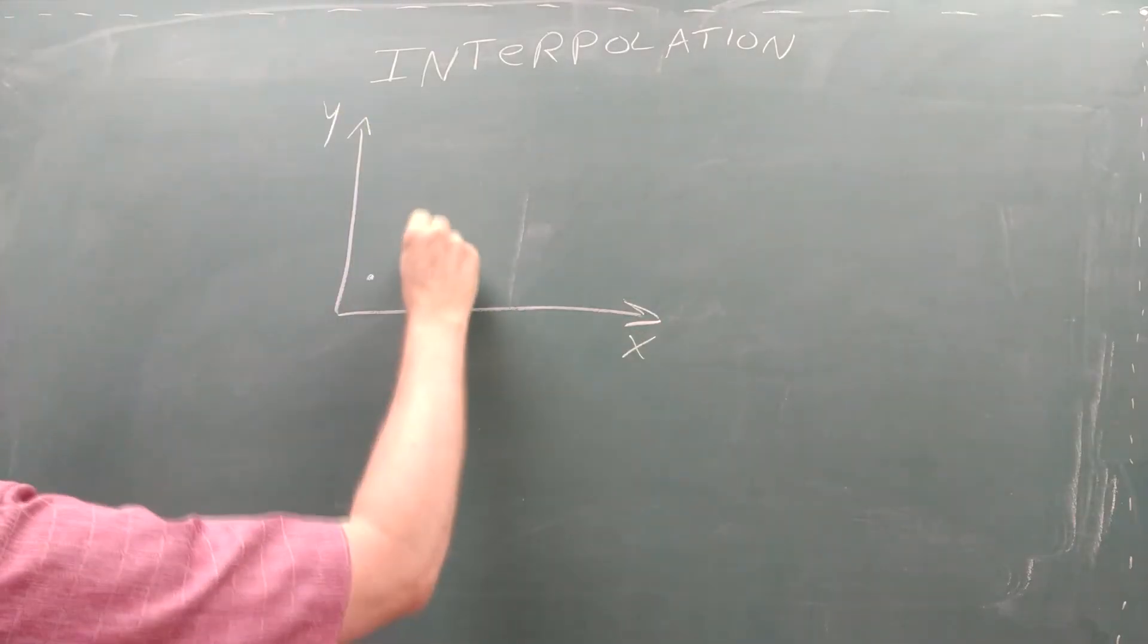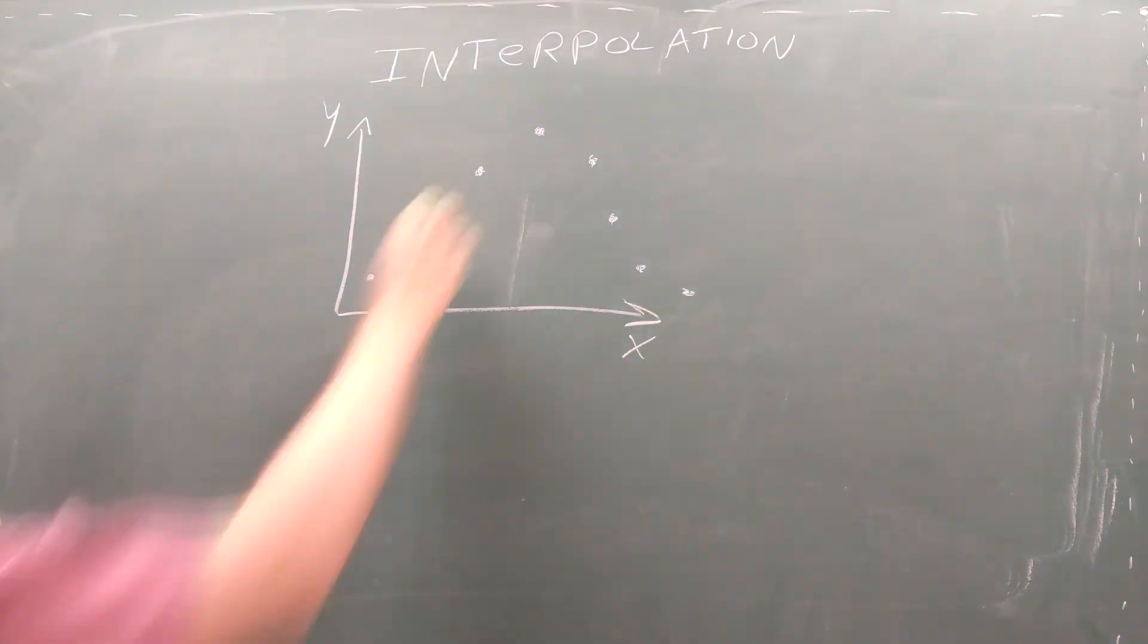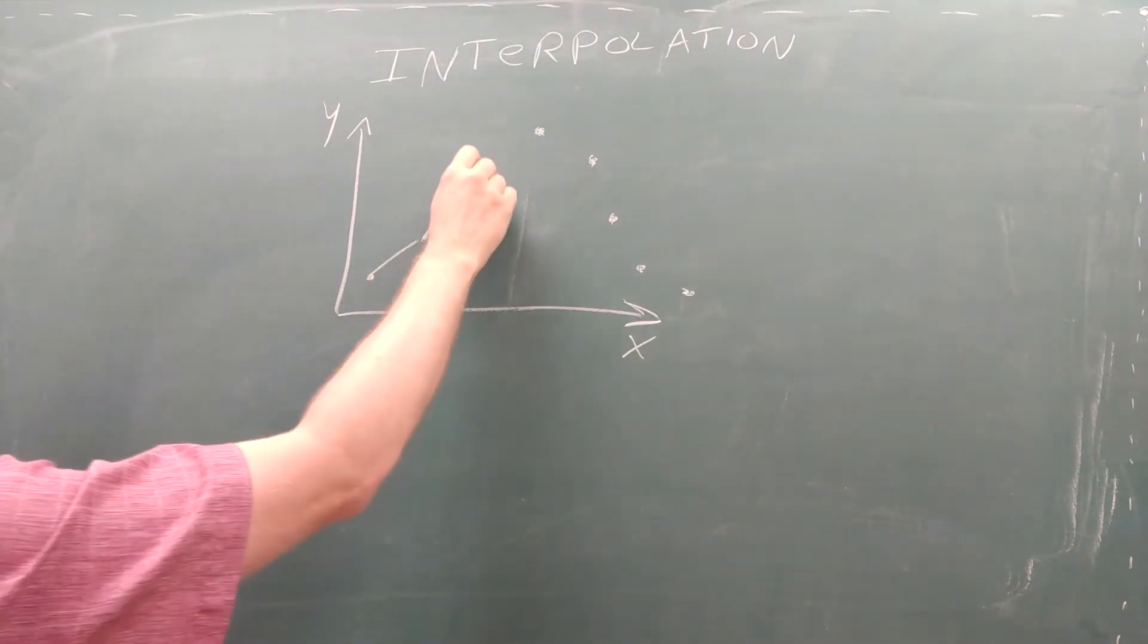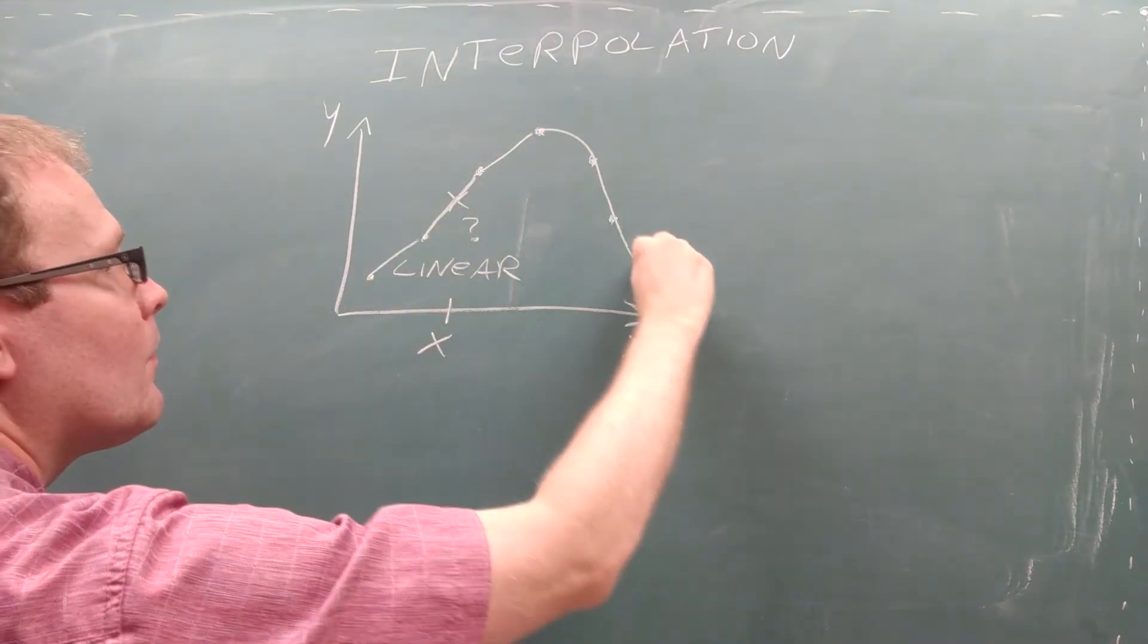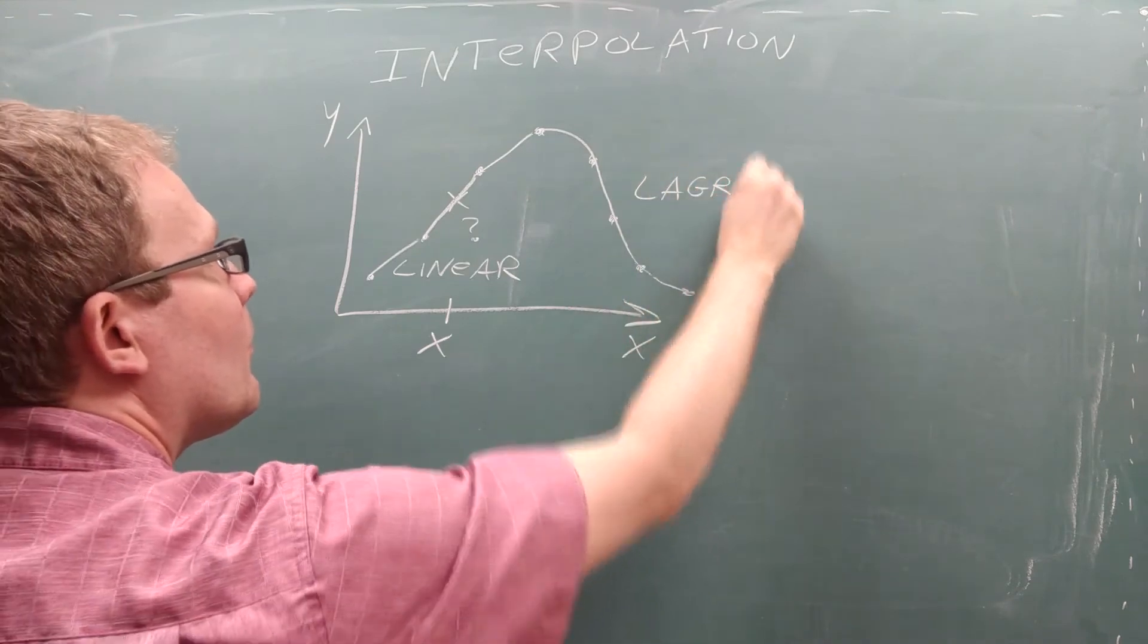Last time we saw that interpolation is useful when you have a set of data and need values between those data points. We also saw that linear interpolation is a simple approach that accomplishes this goal, but in this episode we'll explore how we can do better if we use a Lagrange polynomial instead of a line.